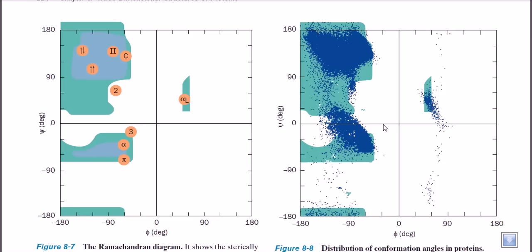The distribution of different torsional angles shows which parts are really favored for making alpha helices rather than beta sheets. If we measure torsional angles that lead to points in the favored regions of the Ramachandran plot, those structural conformations are really favorable. But if the torsional angles give a point at the zero region or the middle area of the Ramachandran plot, those parts are called the not-allowed or not-favored parts.